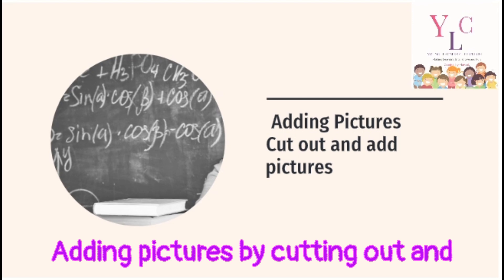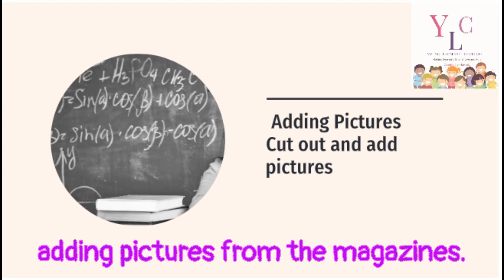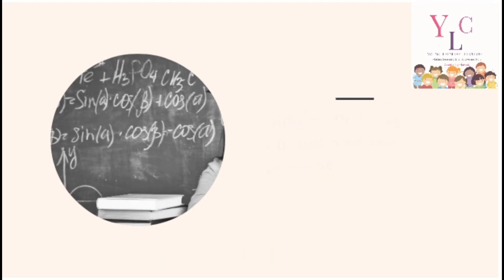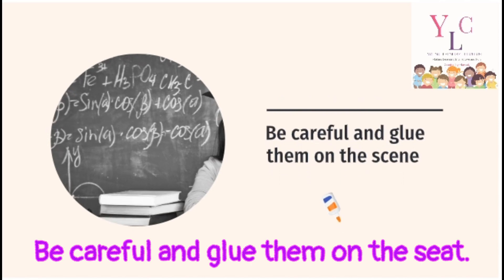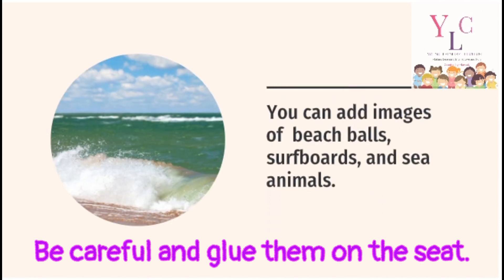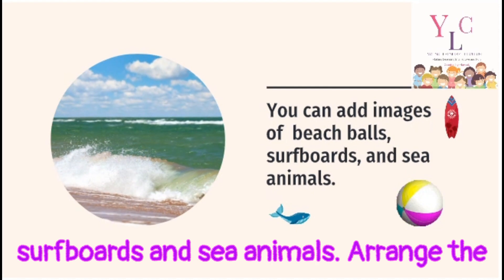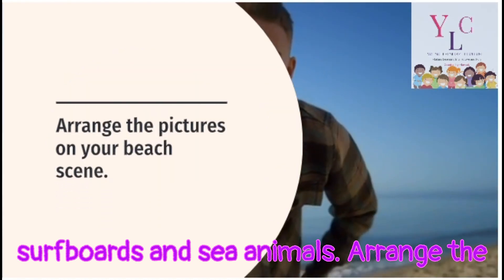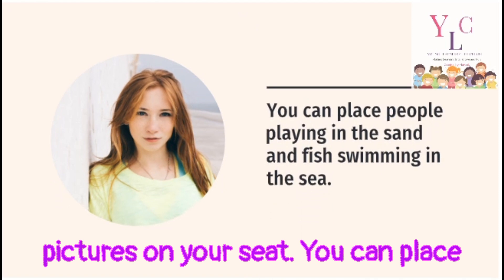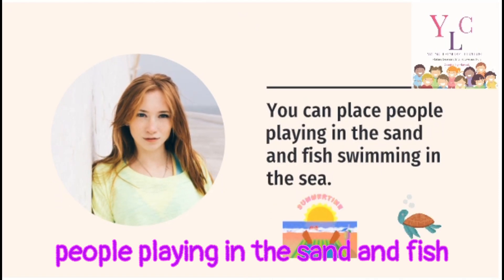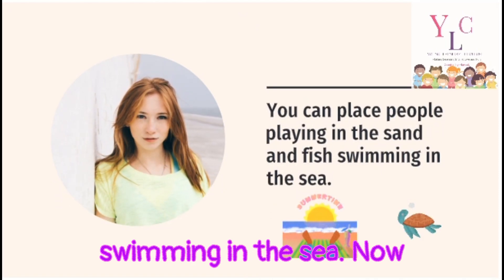Add pictures by cutting out and gluing pictures from the magazines onto the scene. Be careful and glue them on the sea. You can add images of beach balls, surfboards, and sea animals. Arrange the pictures on your scene — you can place people playing in the sand and fish swimming in the sea.